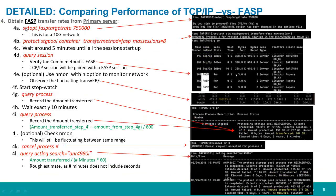Now let's calculate the FASP data transfer rates. On the primary Spectrum Protect server from the admin command line, open up the throttle for the network by issuing SetOpt FASP target rate 750,000 — we did this for a 10-gigabit network. Then issue the Protect Storage Pool command with transfer method equals FASP and max sessions equals 8.